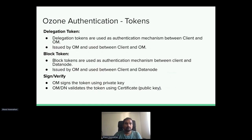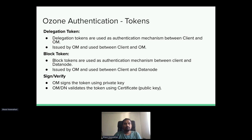For delegation tokens, the way it works is the client talks to OzoneManager with Kerberos. With Kerberos identity established, the client can ask OzoneManager to give a delegation token back. The delegation token can be persisted and reloaded into tasks at execution time — like YARN, MapReduce, and Spark — to consume Ozone services with this delegation token without requiring a keytab associated with these tasks.